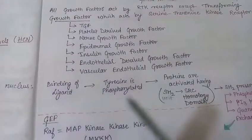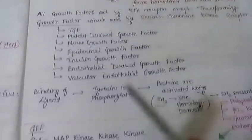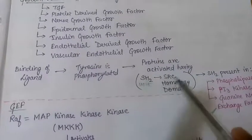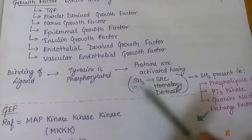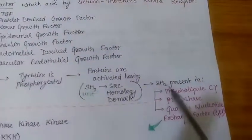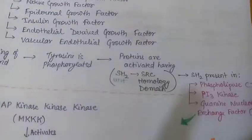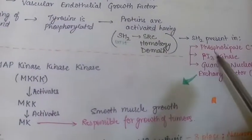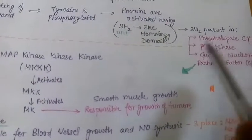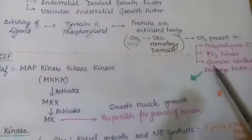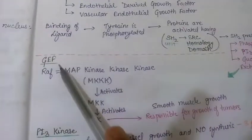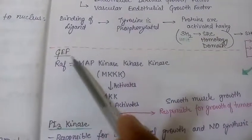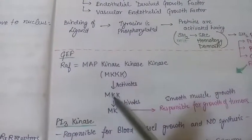When the ligand binds, tyrosine is phosphorylated because the activated enzyme is tyrosine kinase. This phosphorylation leads to activation of proteins that have the SH2 (Src homology 2) domain. The SH2 domain is present in phospholipase C-gamma, PI3-kinase, and guanine nucleotide exchange factor (GEF). GEF can activate MAP kinase kinase kinase (MKKK), also known as Raf.